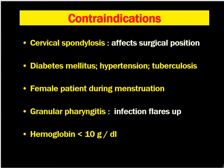Haemoglobin less than 10 g/dL was a contraindication in the past because of bleeding risk, but nowadays bleeding is very uncommon after tonsillectomy. So we can perform tonsillectomy even when the patient has haemoglobin less than 10 g/dL when there are certain indications.